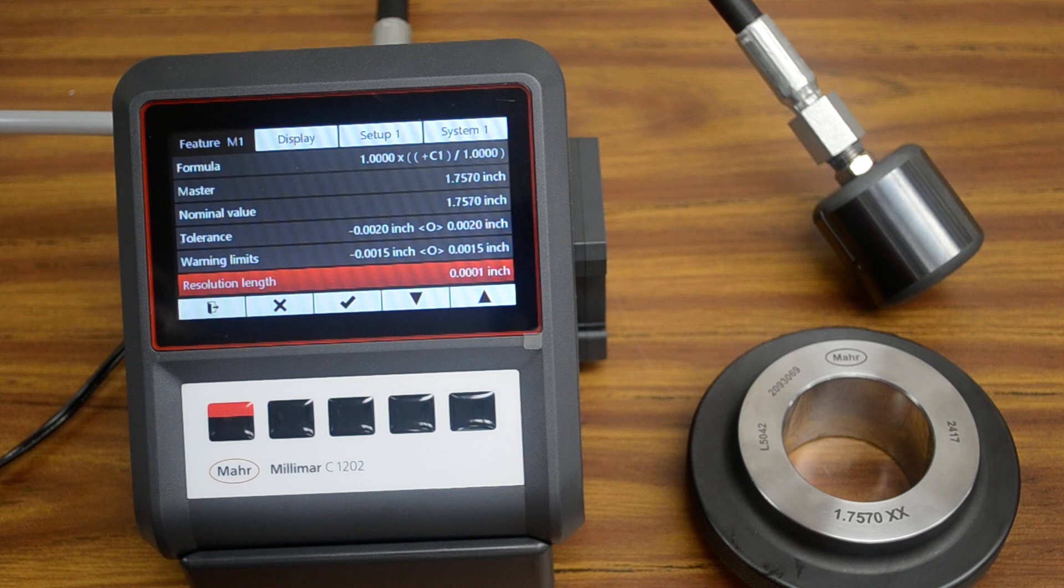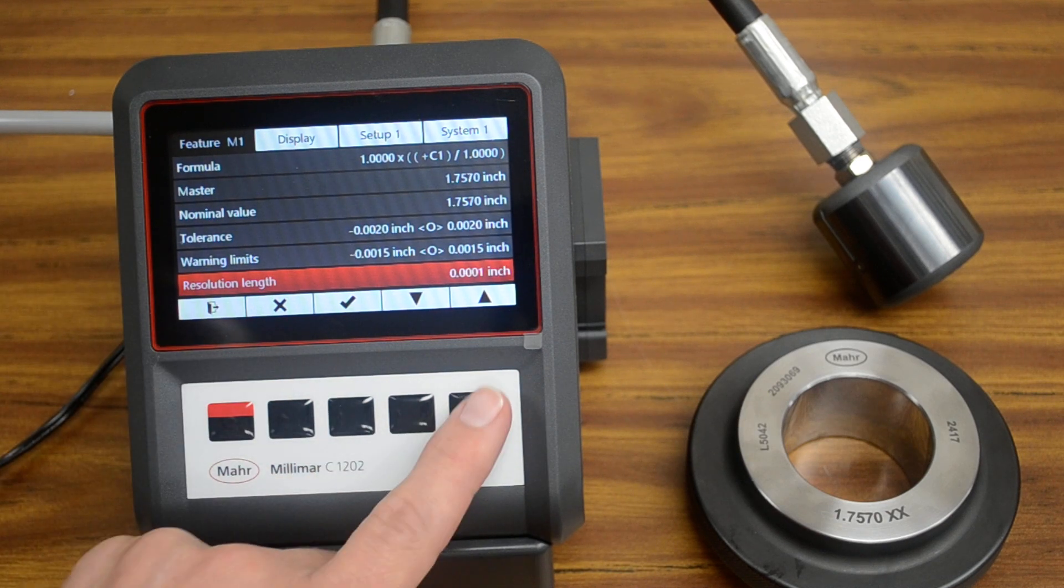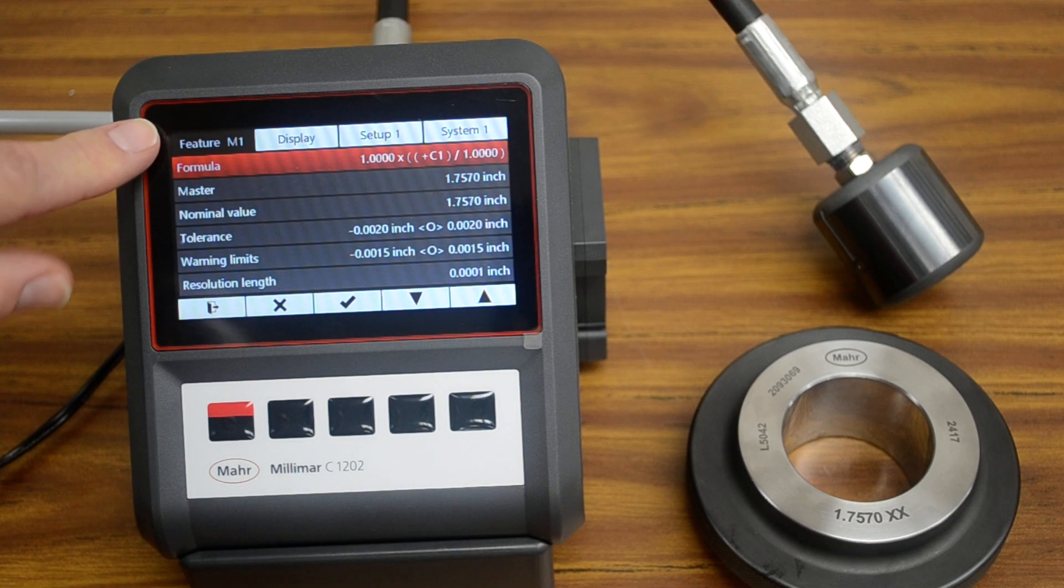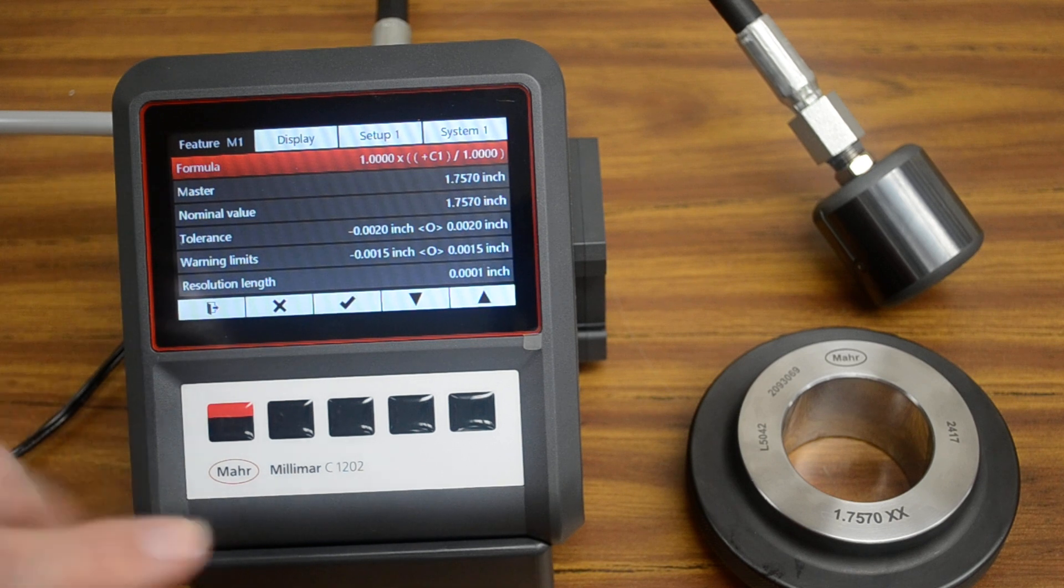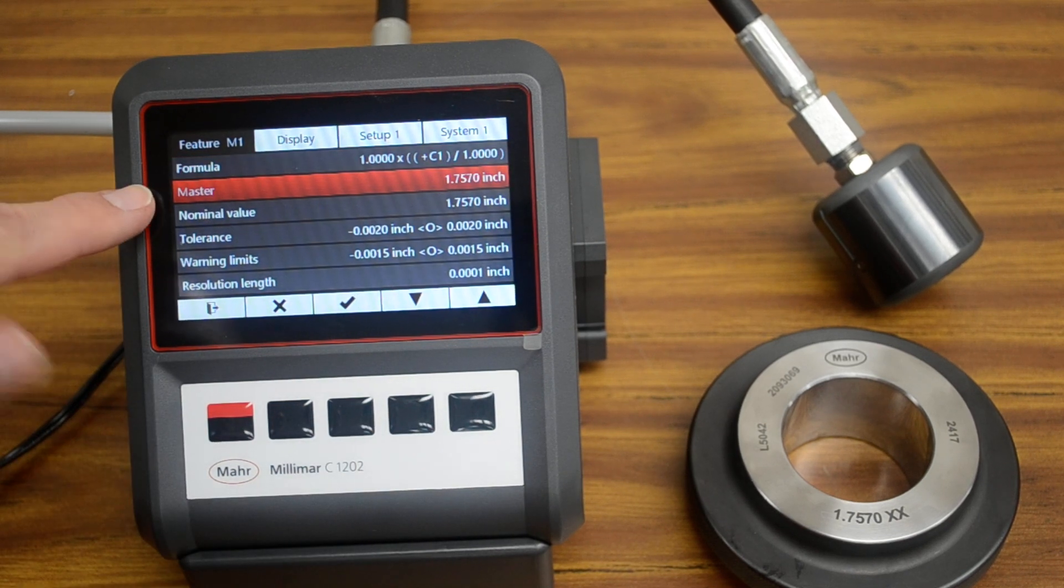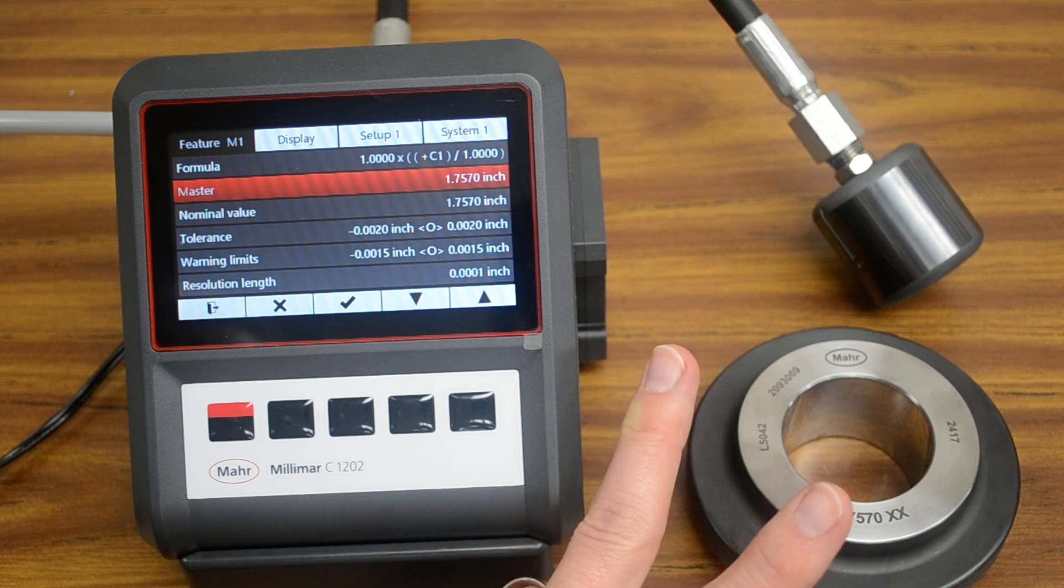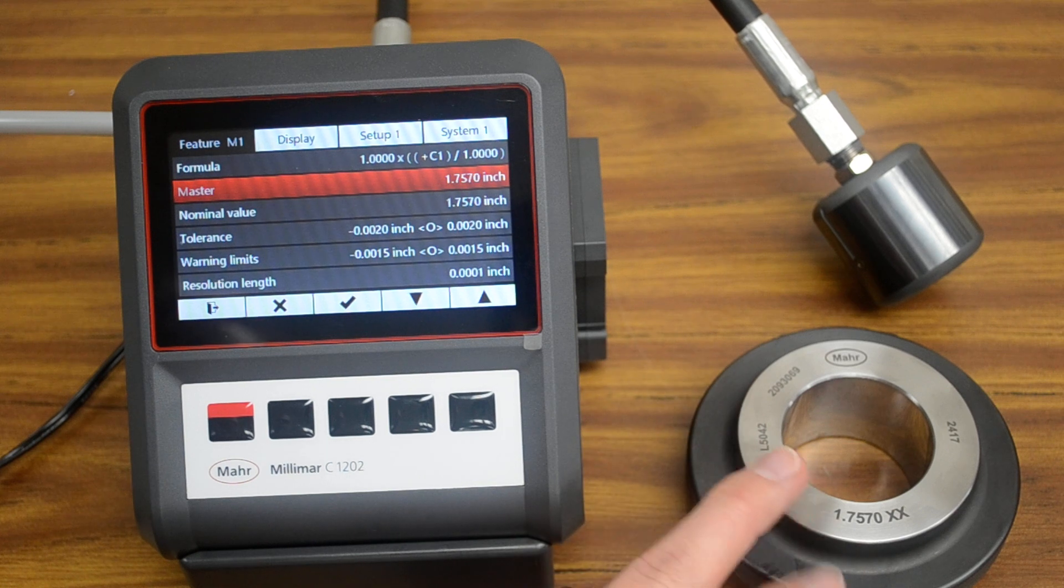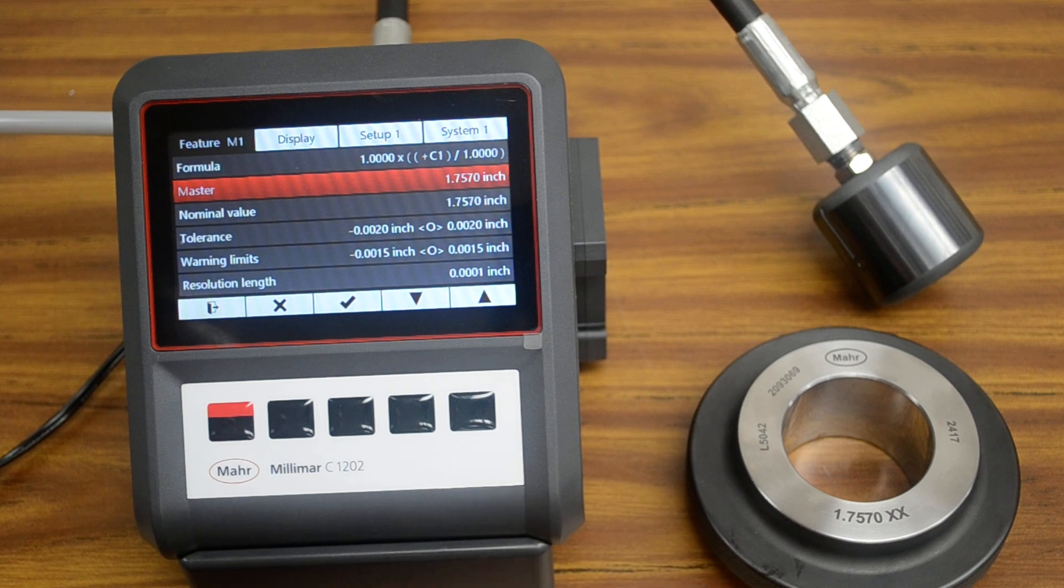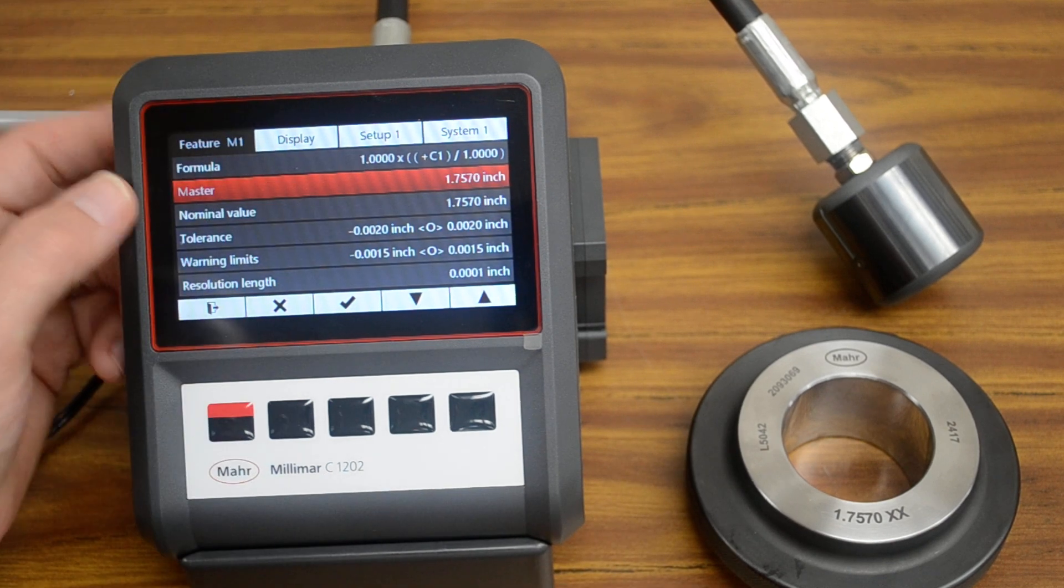First, we're going to press this button to get us to the menu. All of the size information is set here in the feature menu, and we do not want to change formula. The master value is whatever your ring is going to be. If you're using a min-max master, a two-master system, you will have another value where you can set up both the min and the max. In this case, we're using a single master, and so we only get one option.